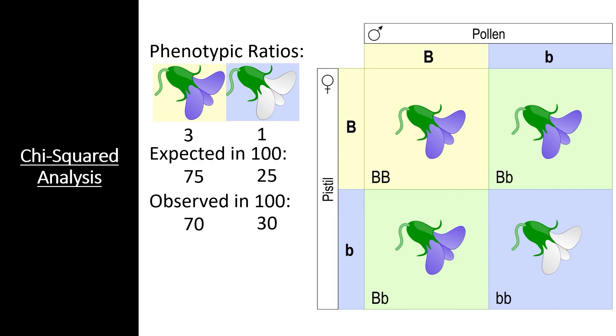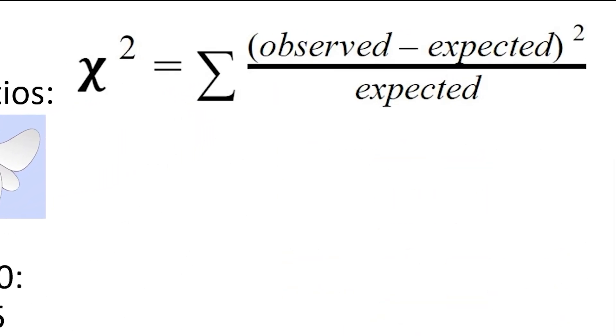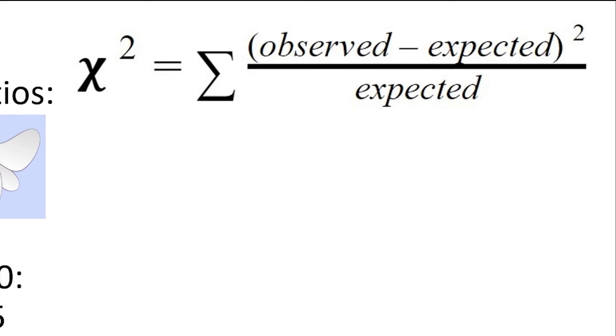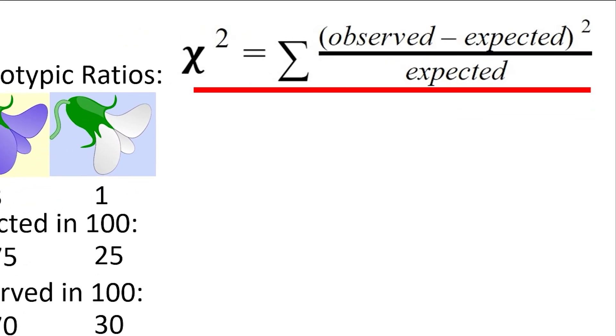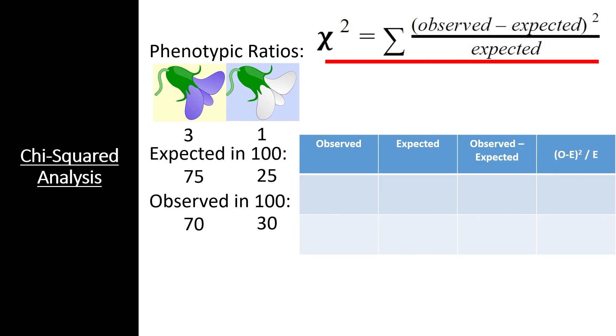This is where chi-squared testing becomes useful. Chi-squared testing is a simple statistical technique that can tell us whether or not our observations support a particular hypothesis or expected value. To measure chi-squared, we subtract the expected value from the observed value, square this number, then divide by the expected value for each class. In this case, each class is a phenotype. Then we add together all of the classes to get the overall chi-squared value. Formally, the formula is read, chi-squared equals the sum of observed values minus expected values squared divided by expected values for each class. So, to calculate the chi-squared value for our particular experiment, we simply need to calculate observed minus expected squared divided by expected for each class, then add them together.